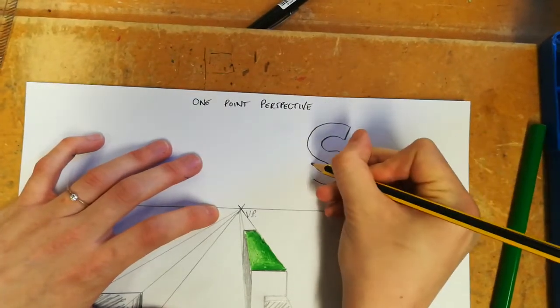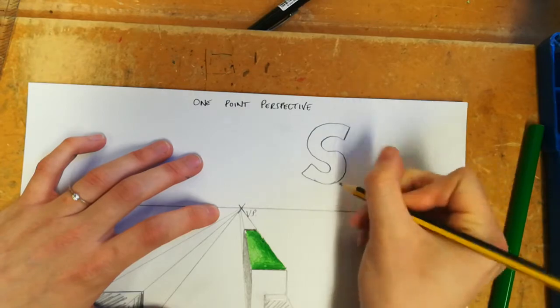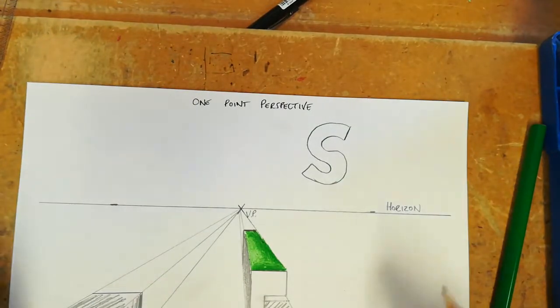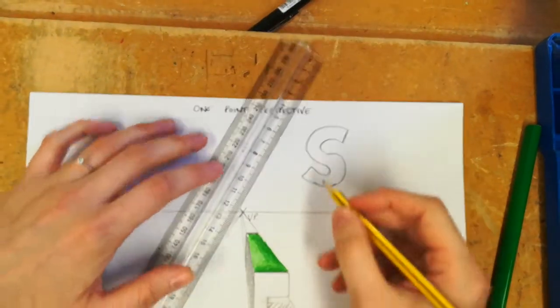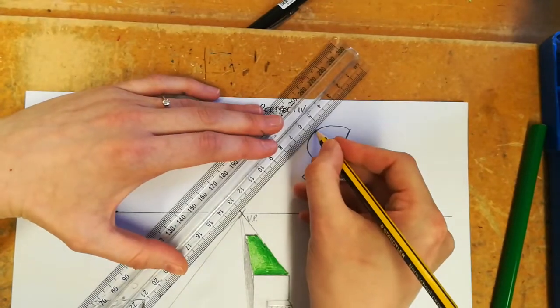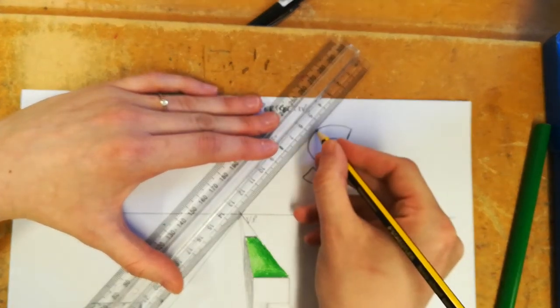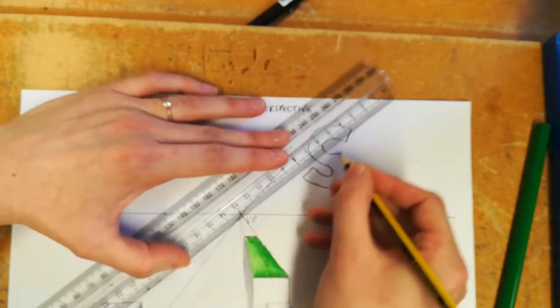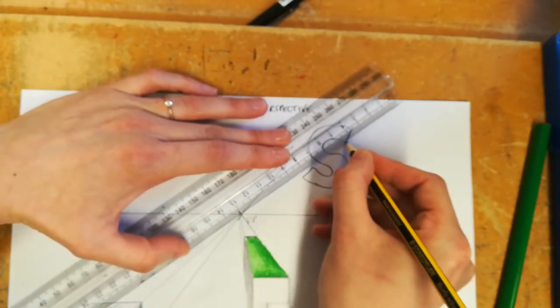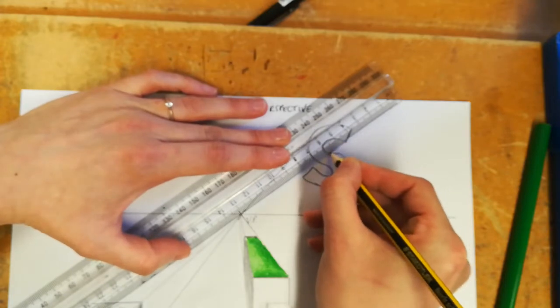All of the rules that we learned when doing blocks are the same. You take an edge or a corner of the shape, which is harder to find on the letter S, and you move it back towards the vanishing point.